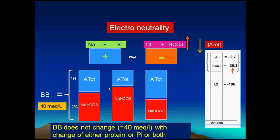Looking at total weak acids and their relationship with bicarbonate: total weak acids — which are protein, albumin, globulin, and inorganic phosphate — form about 16 mEq, and sodium bicarbonate accounts for 24 mEq. Together they form 40, which is the buffer base, also known as the strong ion difference. Decrease in total weak acid — hypoalbuminemia or hypophosphatemia — will be associated with an increase in bicarbonate, so their sum remains 40. Therefore, hypoalbuminemia will be associated with metabolic alkalosis.